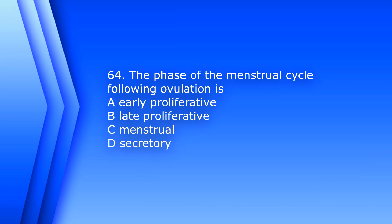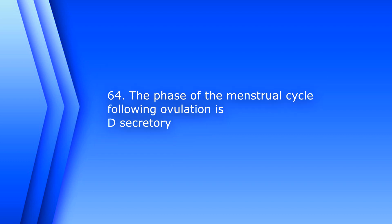Question 64. The phase of the menstrual cycle following ovulation is: A. Early proliferative, B. Late proliferative, C. Menstrual, D. Secretory. The answer is D, Secretory.